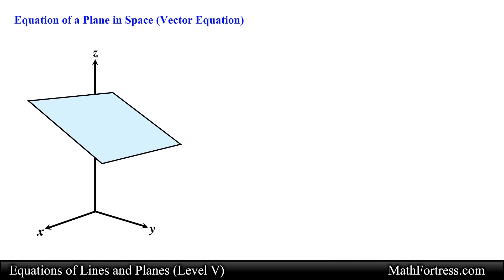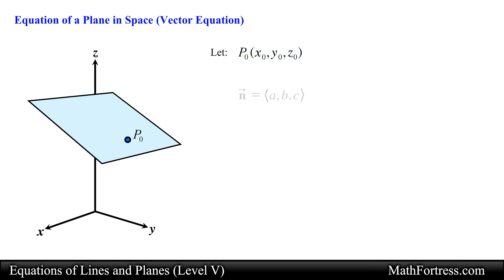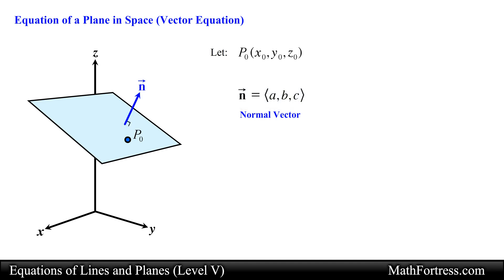Consider a plane located in a three-dimensional Cartesian coordinate system. Let P0 with coordinates x0, y0, and z0 be a point on the plane. Suppose that we also have a non-zero vector that is orthogonal or perpendicular to the plane. Let's denote this vector as vector n with components equal to A, B, C. This vector is called the normal vector of the plane. Now let's assume that we choose a random point on the plane, denoting it as point P with coordinates x, y, z.